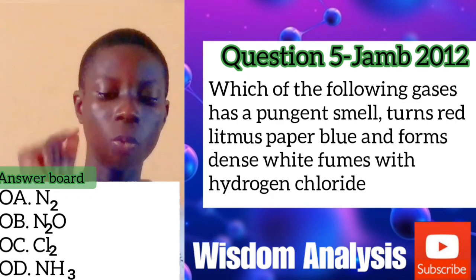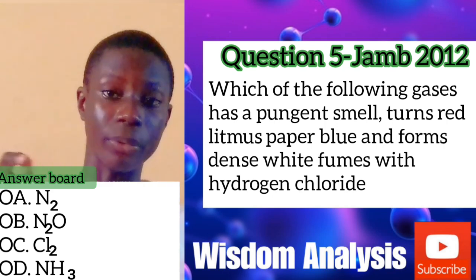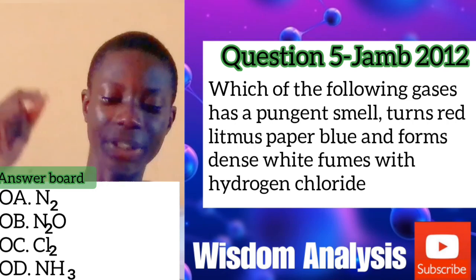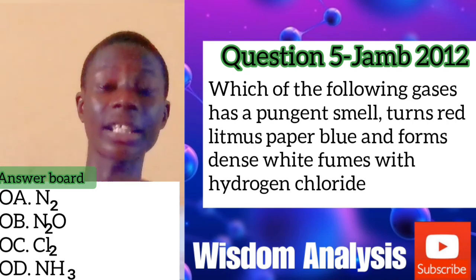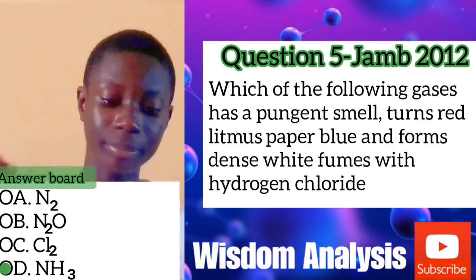Question five on element, mixture and compound: which of the following gases has a pungent smell, turns red litmus paper blue (meaning it is alkaline), and forms dense white fumes with hydrogen chloride gas? If you check the test for gases, you'll find that ammonia has these properties — ammonia is basic and forms white fumes when it reacts with hydrogen chloride. Don't forget to subscribe so you can continue with this series. I'll cover the whole syllabus before the end of April by God's grace, so subscribe and turn on notifications. Bye for now.